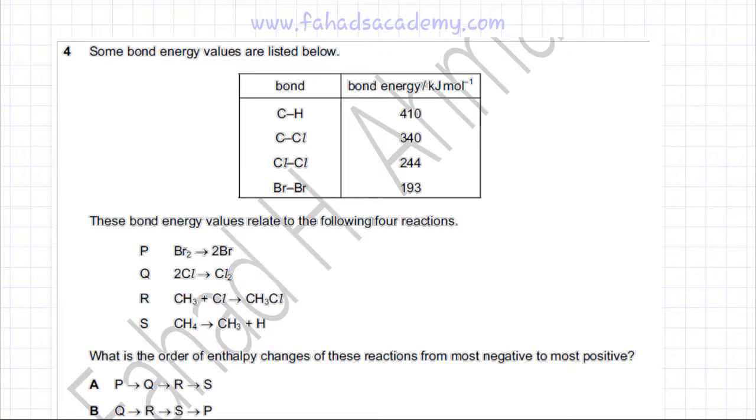So most negative to most positive means we're going to list the most negative reaction first, the most exothermic, and then move to the most endothermic reaction. We need to find the enthalpy change values for all four reactions.